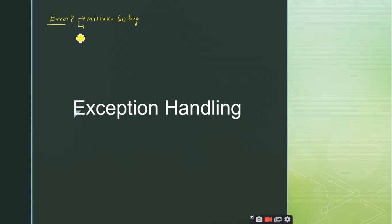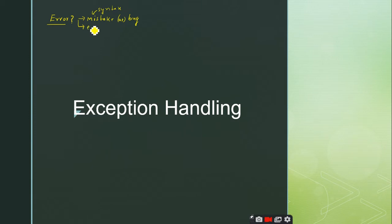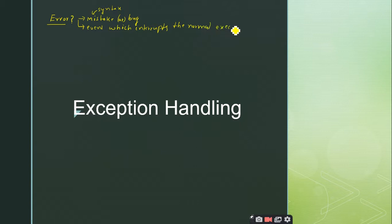What happens when we get errors in the code? Yes, we do get errors in the code. What is a syntax mistake? A syntax mistake is an error — accepted. But the definition of an error goes like this: it is an event which interrupts the normal execution of the code.